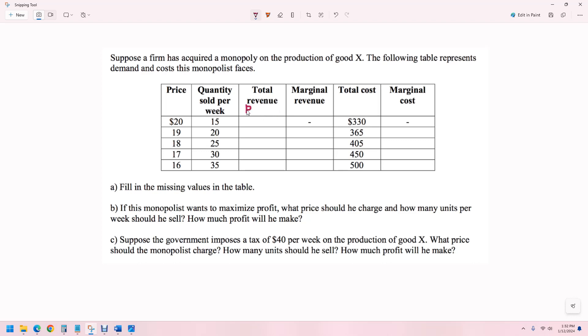Total revenue, fill this in. This is price times quantity. Marginal revenue is the change in total revenue divided by the change in quantity. Marginal cost is the change in total cost divided by the change in quantity, which is just going to be the change in total cost divided by five.